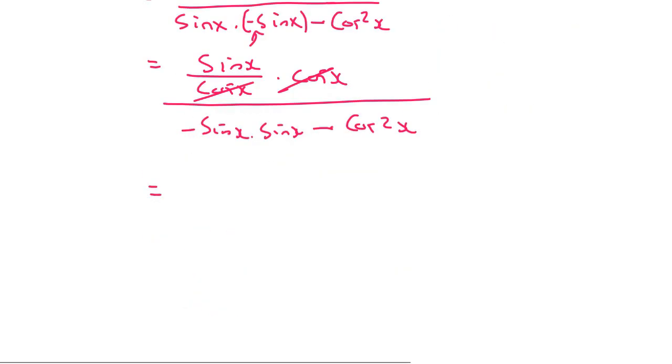Okay, in the next step this part can cancel, and so we end up with sin x over negative sin squared x minus cos squared x. Please remember that you cannot cancel like this because there is more than one term at the bottom.